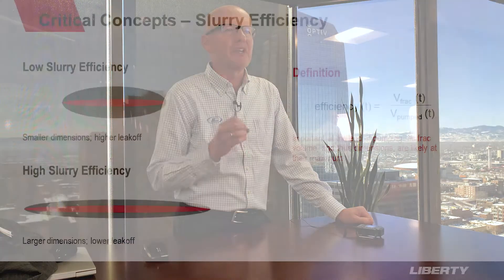We just defined that fracture width is proportional to net pressure. So that's why net pressure is so important — in this simple example where we have no length or height growth, the fracture width is directly proportional to the net pressure, giving us a good relationship between net pressure and one of the fracture dimensions we want to know. The next concept is slurry efficiency. Slurry efficiency is of vital importance because it tells us something about the volume of fluid in the fracture. Since we already have a relationship between pressure and width, slurry efficiency helps us tie down length and height, because volume equals width times length times height of the fracture.